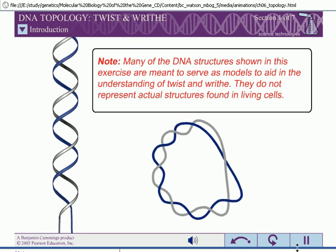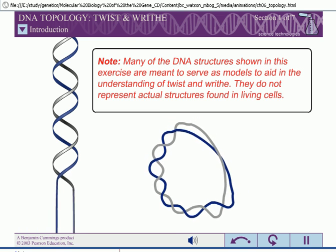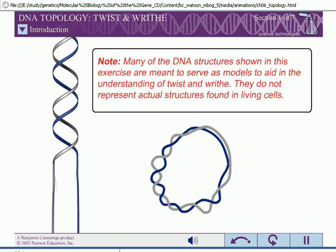Many of the DNA structures shown in this exercise are meant to serve as models to aid in the understanding of twist and writhe. They do not represent actual structures found in living cells.